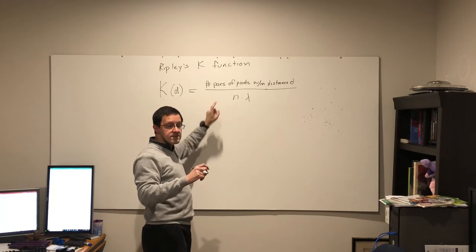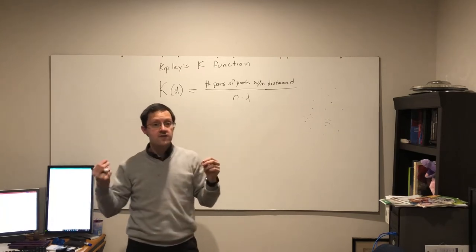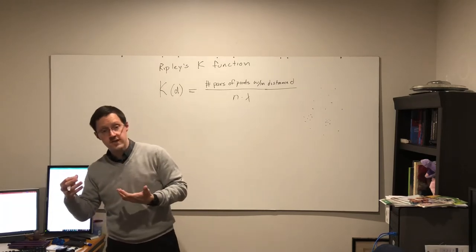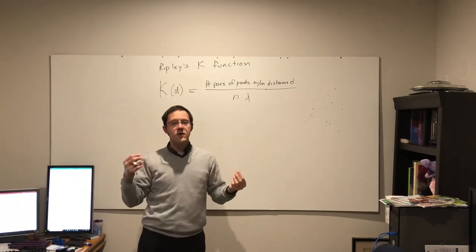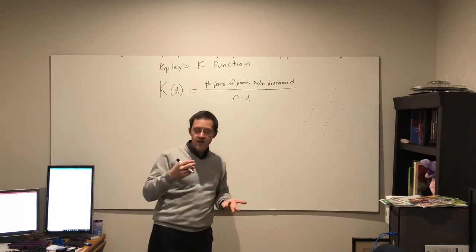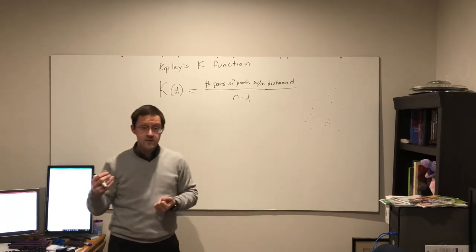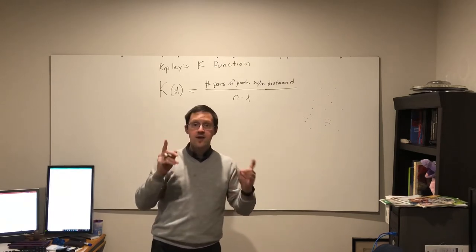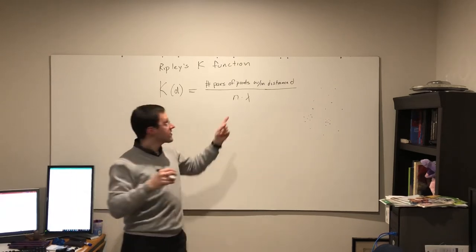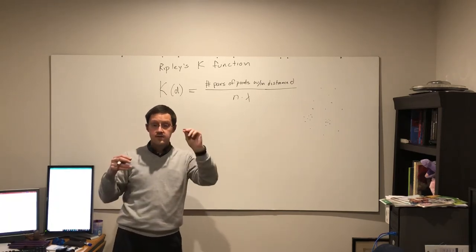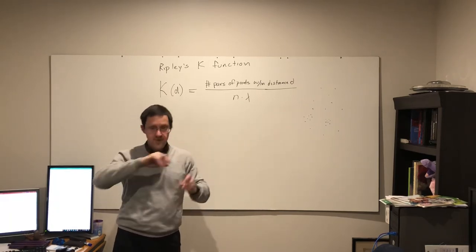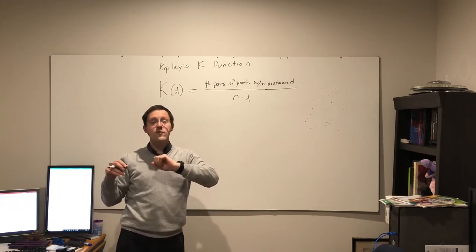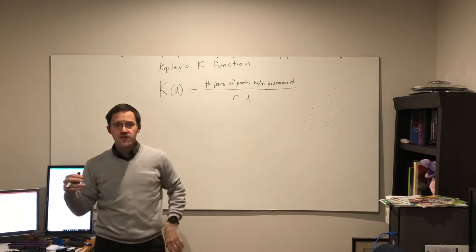Now this can be basically very challenging to come up with what that expected function is under the null hypothesis. Unlike the R statistic, we don't have a very clear mathematical formula that we can apply. Because ultimately this is based not just on the density and the number of points, it also ends up involving the shape of the study area.